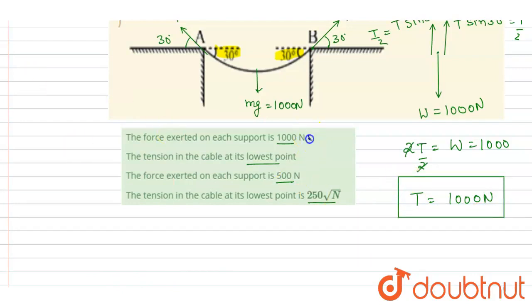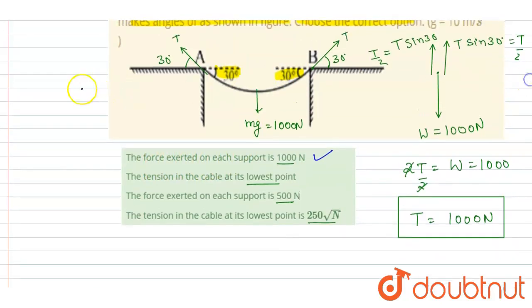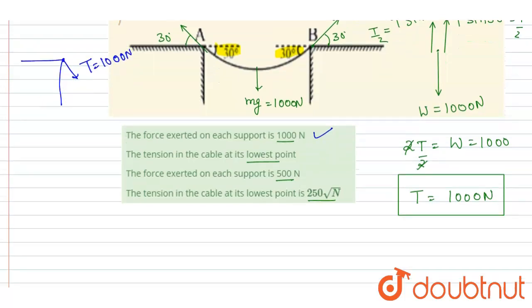Now if you see, option A is correct because the force exerted on each support will be the same as that of the tension force. The support will also experience the same tension force, that is 1000 newtons. Now let's cut this.